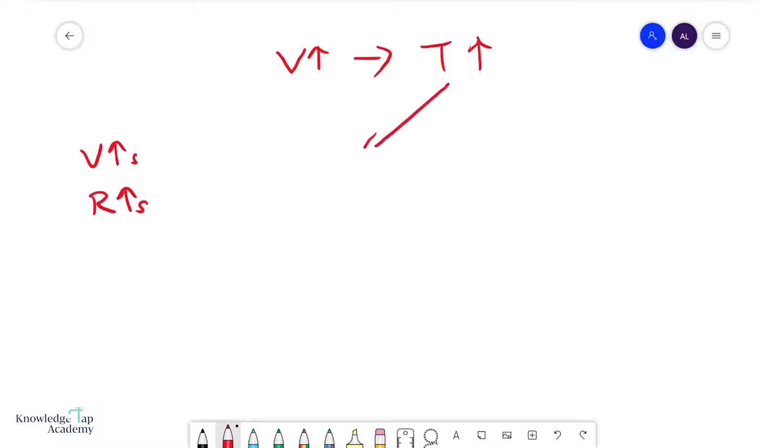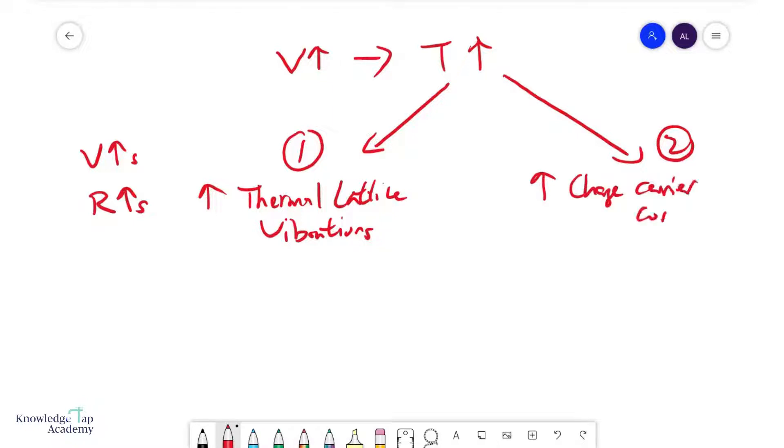Number one: there is this thing called increased thermal lattice vibrations. Number two: there will be an increase in your charge carrier concentration. Let me describe what these two things do. When your temperature goes up, your lattice ions tend to vibrate a little bit more violently.